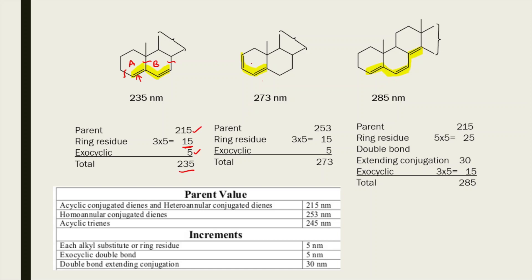For the second molecule, both double bonds are part of the same ring, so it is a homoannular diene with a parent value of 253 nm. There are three ring residues (value = 15 nm). The first double bond is not exocyclic, but the second double bond is exocyclic to ring B, giving one exocyclic double bond (5 nm). The total lambda max value becomes 253 + 15 + 5 = 273 nm.